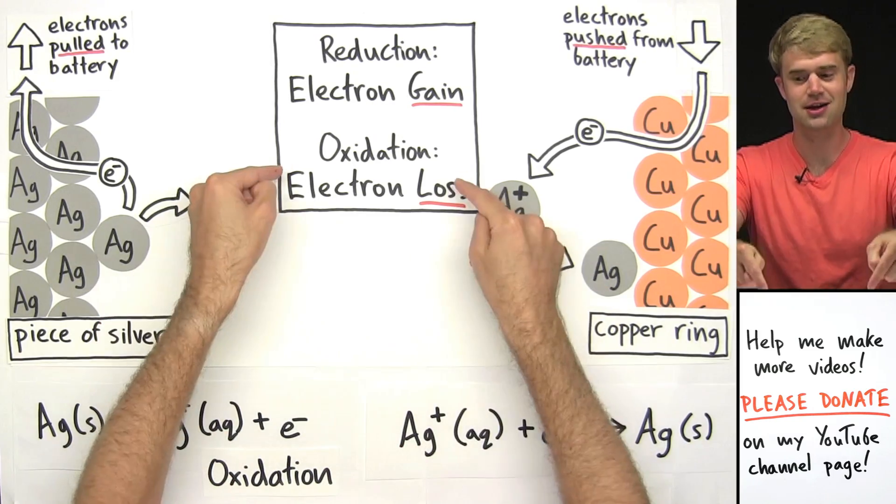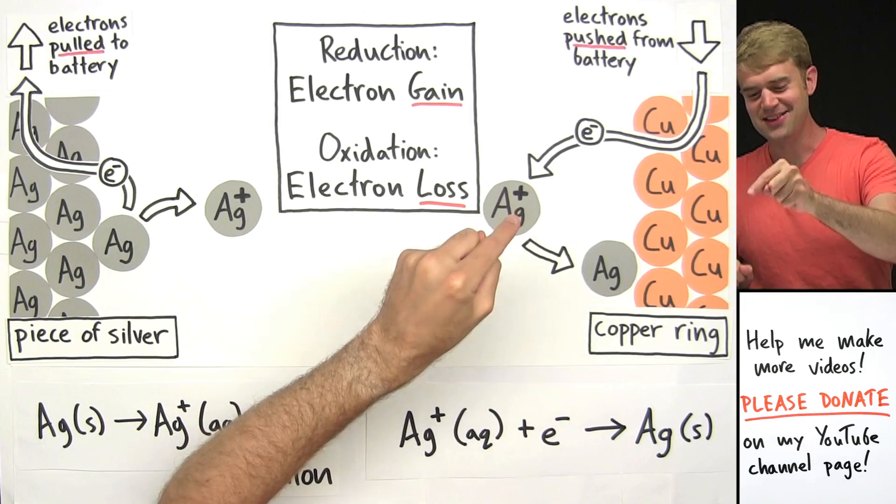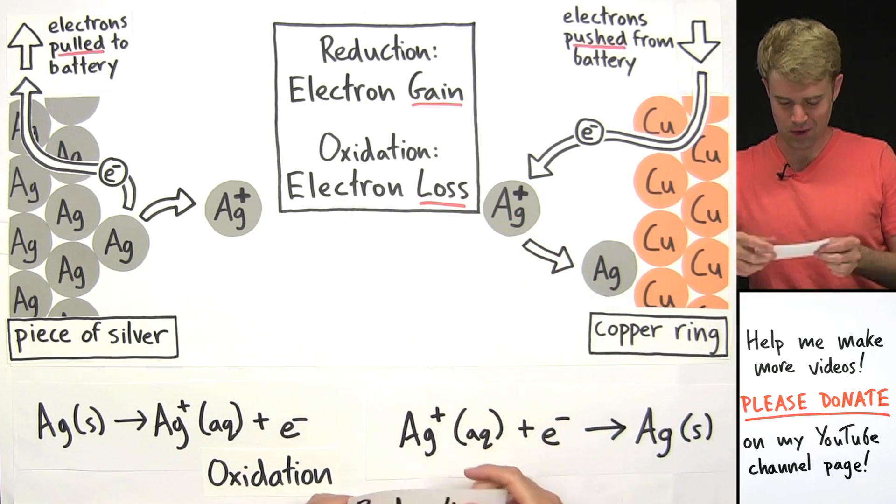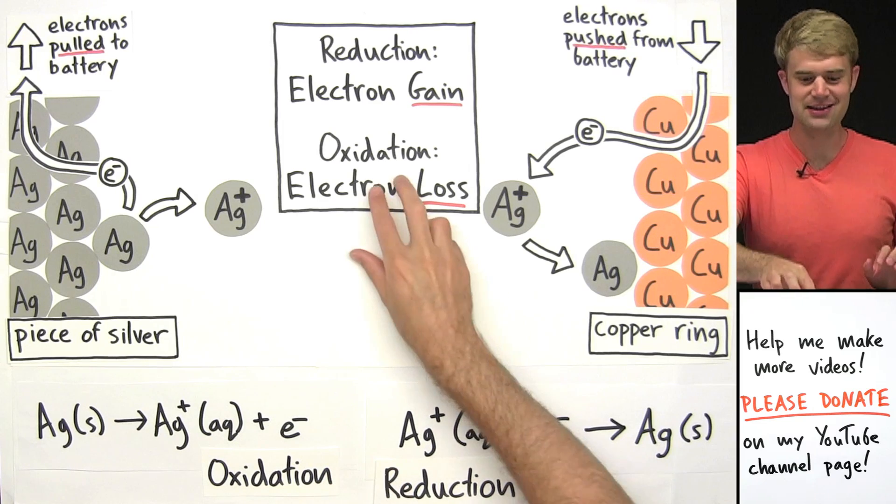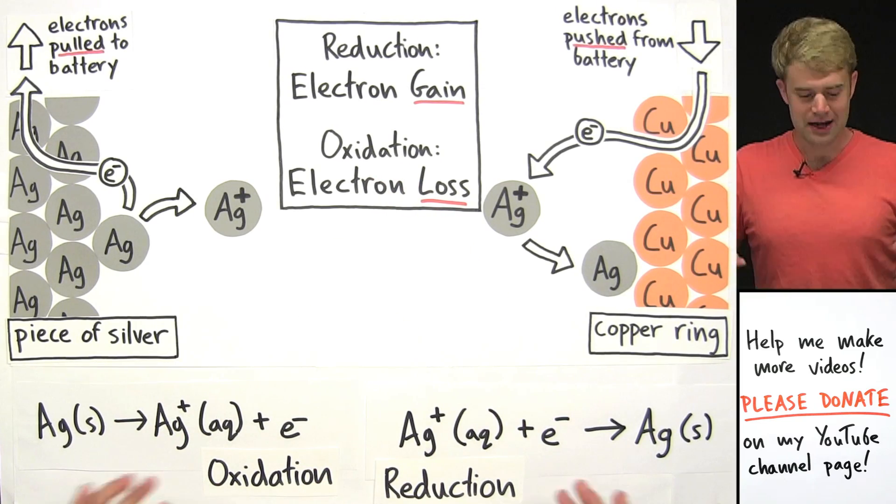Over here on the copper ring, these silver ions are gaining electrons, so reduction is happening here, oxidation and reduction.